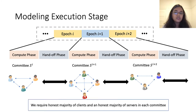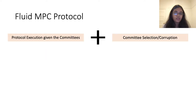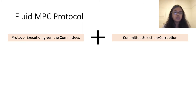For our protocols, we consider an honest majority of clients and an honest majority of servers in each committee, though one could consider a dishonest majority setting as well. Based on the discussion so far, it's clear that there are two main components in a Fluid MPC protocol: first, deciding how the committees for each epoch will be selected, and then, given these committees, how the execution phase of the protocol will proceed.